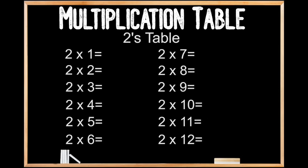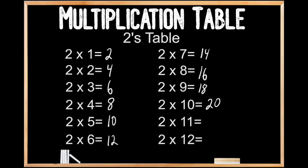2's table. 2 times 1 is 2. 2 times 2 is 4. 2 times 3 is 6. 2 times 4 is 8. 2 times 5 is 10. 2 times 6 is 12. 2 times 7 is 14. 2 times 8 is 16. 2 times 9 is 18. 2 times 10 is 20. 2 times 11 is 22. 2 times 12 is 24.